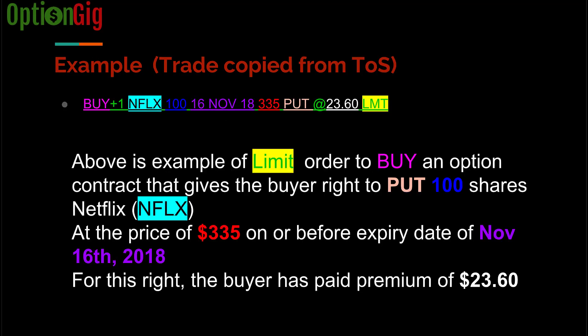Now we will look at a trade of a long put. This is a trade copied from the thinkorswim platform — other broker platforms may display it a little differently. This is an example of a limit order to buy an option contract that gives the buyer the right to put or to sell 100 shares of Netflix at a price of $335 on or before the expiry date of November 16, 2018. For this right, the buyer has paid a premium of $23.60. This is one option contract of Netflix, which controls 100 shares, with a strike price of 335 and expiration of November 16, 2018. This is a put option contract with a premium of $23.60, placed as a limit order.